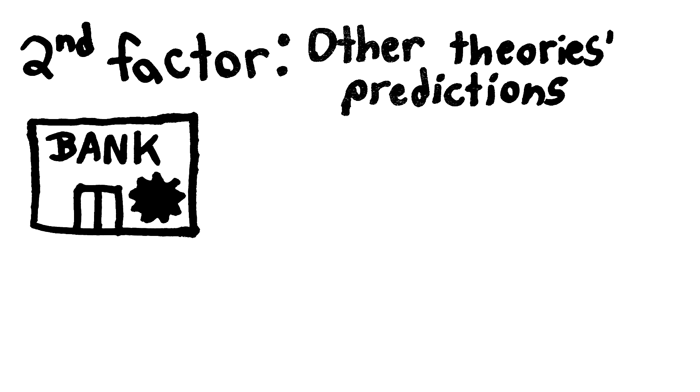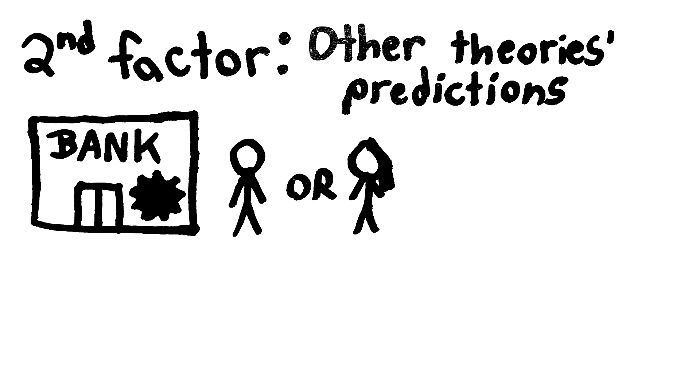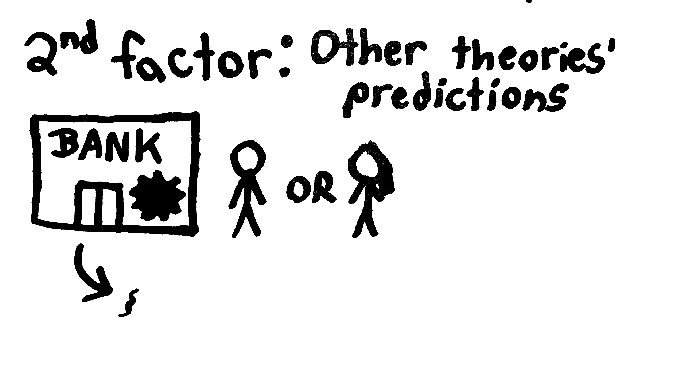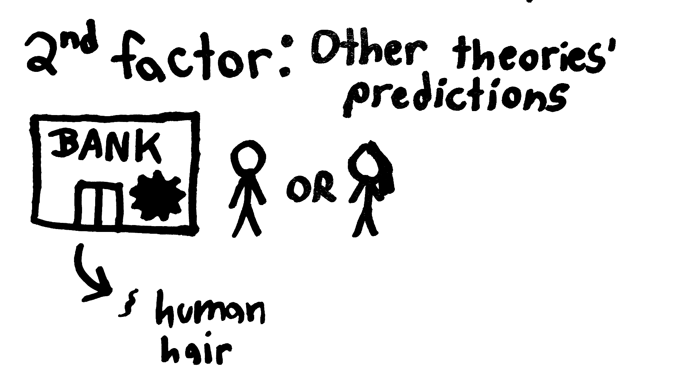For example, say that one person robbed the bank, and we know that it was either Alice or Bob. We find some hair at the scene of the crime, and some scientists confirm that it is human hair. Notice, since Alice is a human with hair, the theory that Alice robbed the bank strongly predicts that there would be human hair at the crime scene.